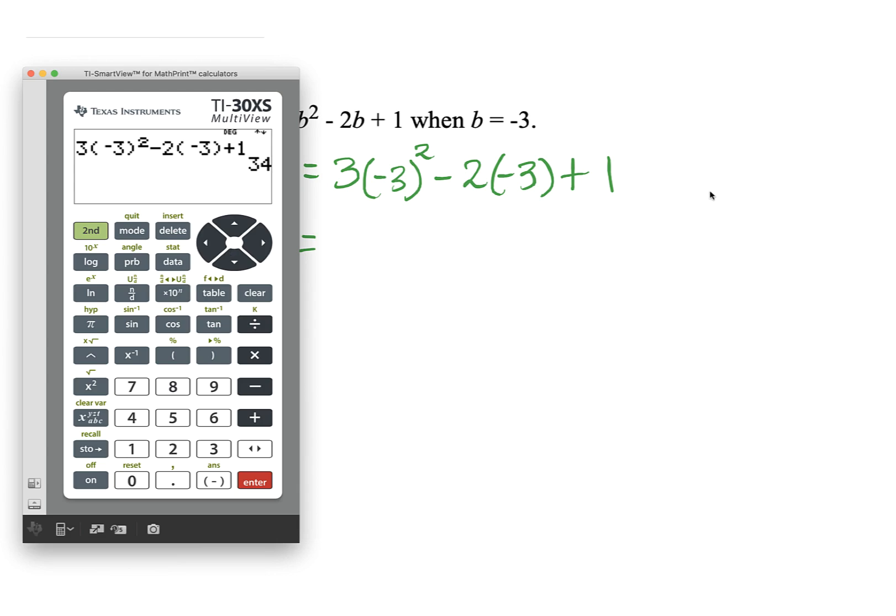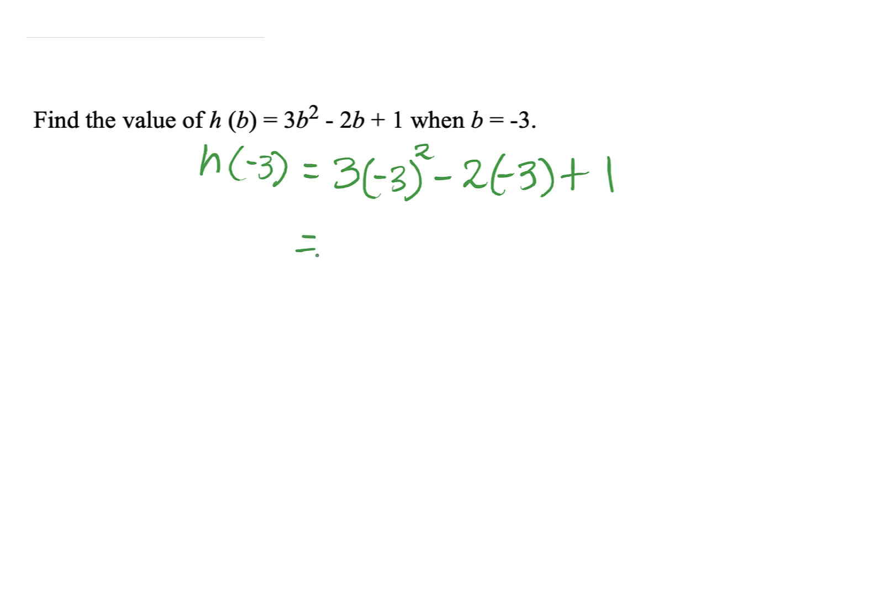That's if you were on the calculator section. However, if this was non-calculator, we're going to apply PEMDAS. Do we have any parentheses? No. Do we have exponents? Yes. So this would be 3. Negative 3 squared would give us a positive 9 because your exponent is an even number. Next step, we would multiply. 3 times 9 is 27. Subtraction. 2 times negative 3 would give me negative 6, and I'm adding 1. Always remember, when you have these neighboring negative signs, they come together and form a positive. So this is 27 plus 6 plus 1. And when we add 27 plus 6 plus 1, we're going to get a value of 34.